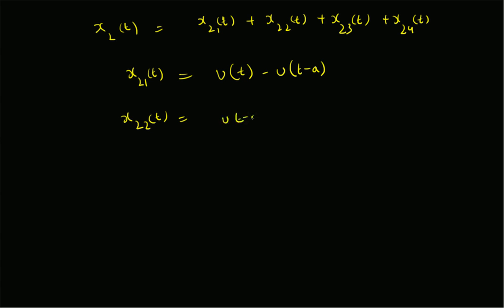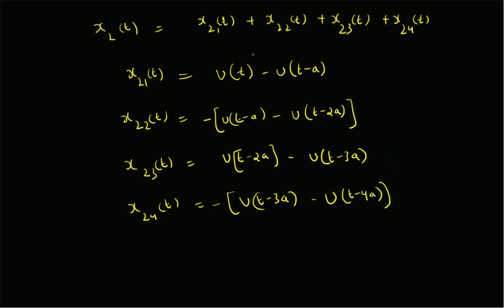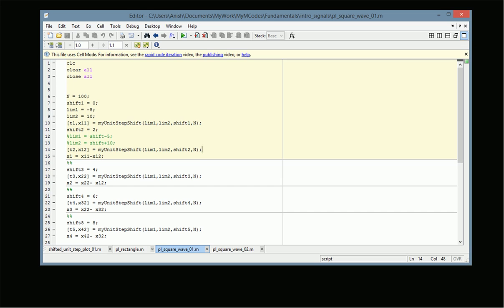x22(t) is minus [u(t-a) minus u(t-2a)], representing a negative pulse. Then x23(t) is u(t-2a) minus u(t-3a), and finally x24(t) has a minus one factor, so it is minus [u(t-3a) minus u(t-4a)]. These four components can be added together to get the complete square wave.